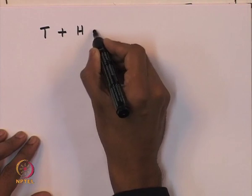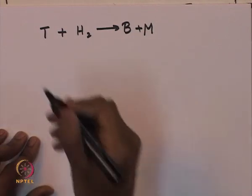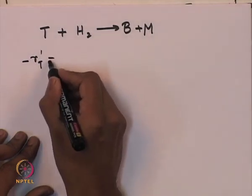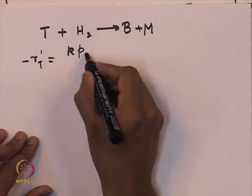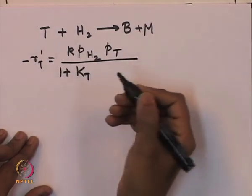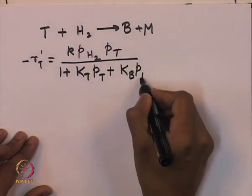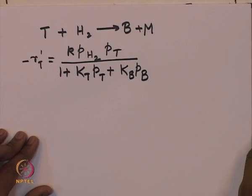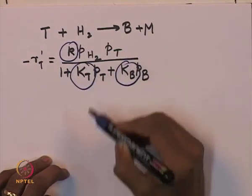We found that for toluene reacting with hydrogen leading to benzene and methane formation, the rate of consumption of toluene can be written as a rate constant k multiplied by the partial pressure of hydrogen multiplied by the partial pressure of toluene, divided by 1 plus the adsorption constant for toluene multiplied by the partial pressure of toluene plus the adsorption constant for benzene multiplied by the partial pressure of benzene. We used experimental data to perform linear regression and estimate the parameters k, kT, and kB.